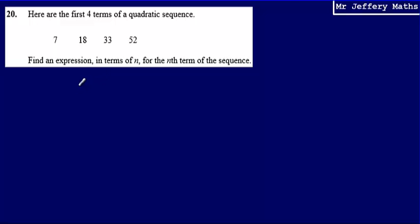This is question 20 from a series of videos taking a look at the Edexcel practice papers. Here we're given the first four terms of a quadratic sequence: 7, 18, 33 and 52. And we're asked to find an expression in terms of n for the nth term of the sequence.